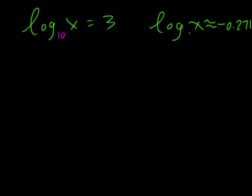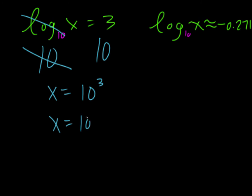Find x such that log of x equals 3 and log of x approximately equals negative 0.271. What we want to do is take whatever the base is—remember the implied base on both of these is a 10—so we're going to do a big 10 and a big 10. Log 10 cancels the big 10, so we just have x equals 10 to the 3. Simplify that, x is 1000.